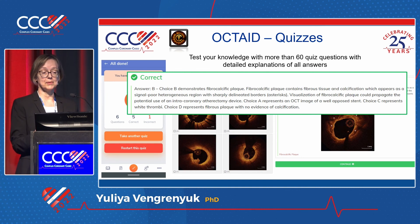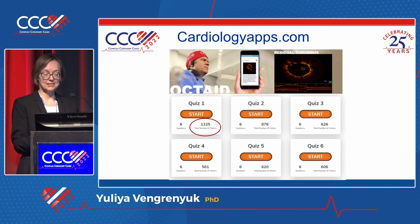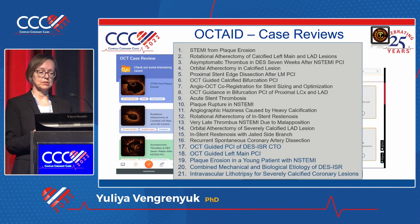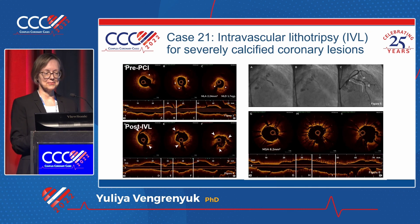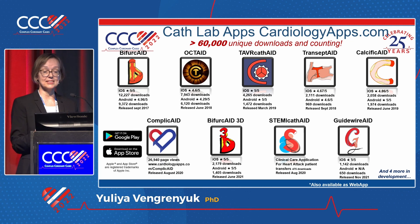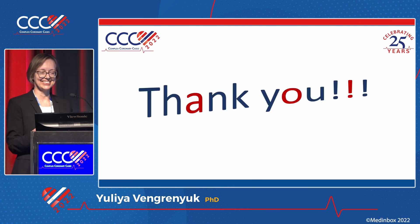The most popular feature in OCTAID is the quiz section — 60 questions with explanations for correct and incorrect answers. You can go straight to quizzes to learn imaging efficiently. We also have case reviews, and we just added six new cases including new techniques like intravascular lithotripsy (IVL). By number of downloads, our app is number two after Bifurcate — and we are working on an IVUS Aid application coming soon.